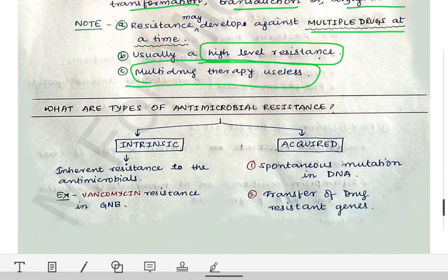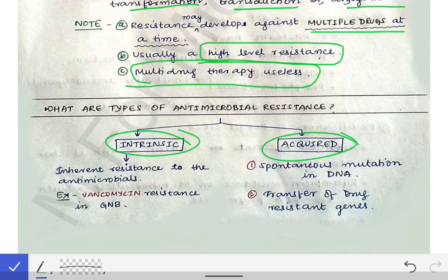The types of antimicrobial resistance are intrinsic and acquired. Intrinsic means it is an internal property of the bacteria — for example, vancomycin resistance in gram-negative bacteria. The cell wall of gram-negative bacteria causes intrinsic resistance to vancomycin, so vancomycin should not be used for treating gram-negative bacteria.